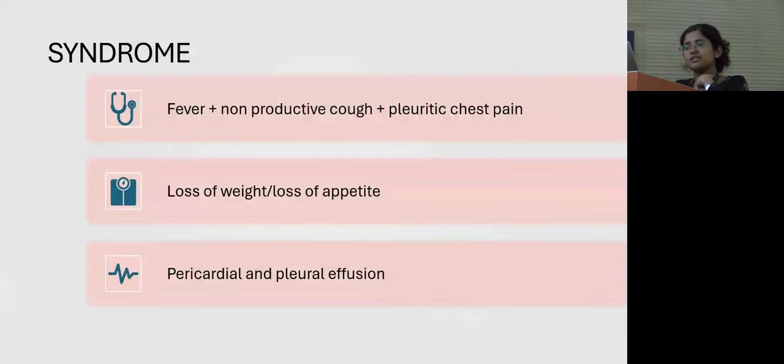At the end of history and examination, summarizing, we had a 62-year-old female who presented with fever, non-productive cough, and pleuritic chest pain, with associated history of loss of weight and loss of appetite, and examination findings of pericardial and pleural effusion.